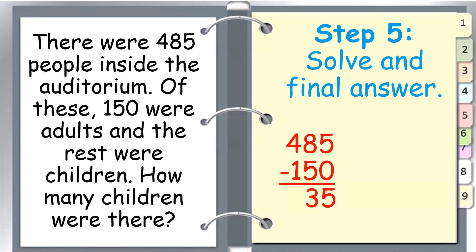8 minus 5 is 3. 4 minus 1 is 3. So our final answer is there are 335 children inside the auditorium.